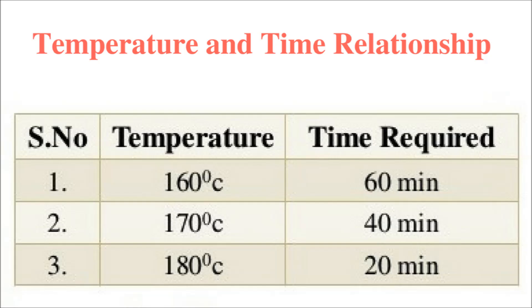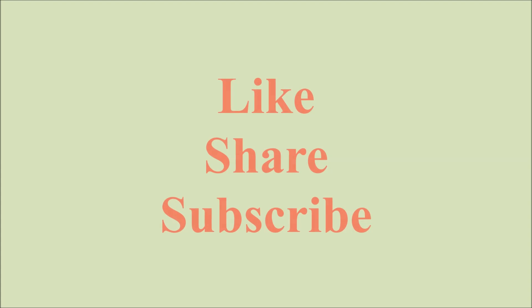This is the most important chart — you have to memorize it. If the temperature is 160 degrees centigrade, the time required for sterilization in the hot air oven will be 60 minutes. If the temperature is 170 degrees centigrade, it requires 40 minutes. At 180 degrees centigrade, it requires only 20 minutes for sterilization. The temperature and time relationship is very important — as we increase the temperature, the time required for sterilization decreases. As you can see: 160°C = 60 minutes, 180°C = 20 minutes.